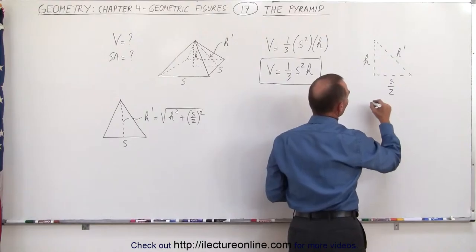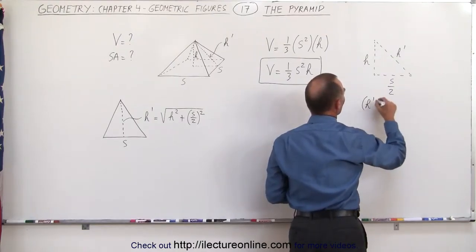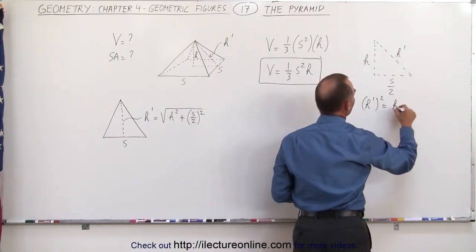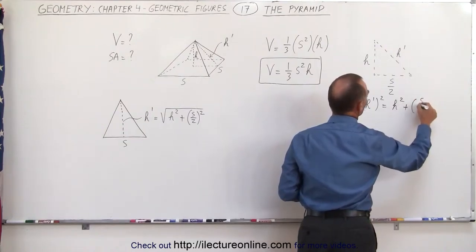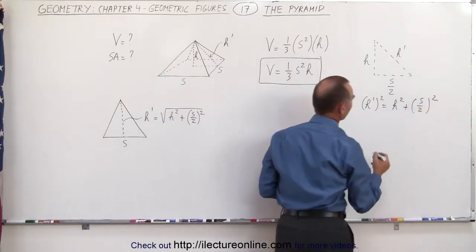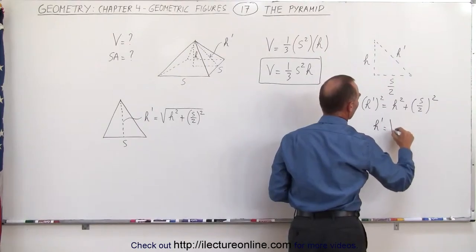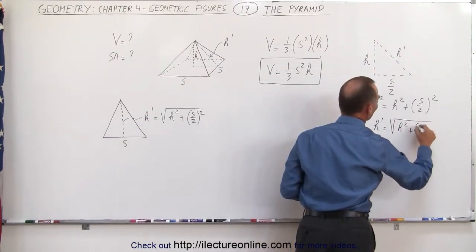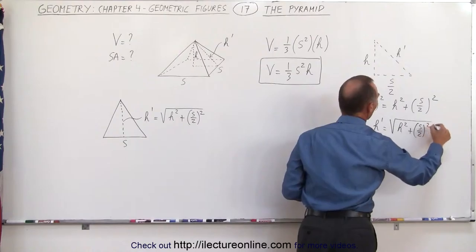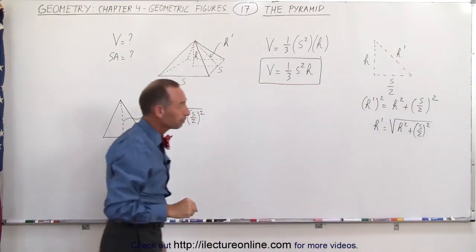Then you realize that h prime squared equals h squared plus the quantity s over 2 squared, or h prime equals the square root of h squared plus s over 2 squared. That's how we find the slanted height of a pyramid.